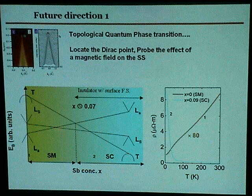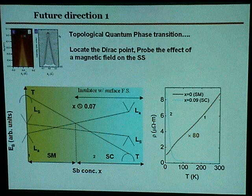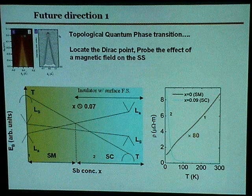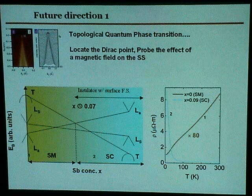One way to determine whether there is a real Dirac point without ARPES is to dope with tin or something and look at thermopower. Thermopower is very sensitive to whether the Fermi level is above or below. If my Fermi level is here, thermopower will have a positive sign, and there a negative sign. We are already in the process of doing that and know it's near 4%.